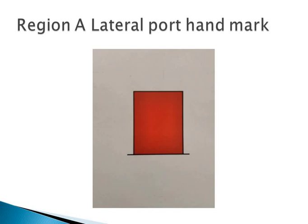This card shows a red can, so this is Region A. Using our trick — Indians like Coca-Cola can — for a can, it is always port, and for a cone, always starboard. So this is Region A lateral port hand mark. Color: red. Top mark: nil. Light: red.